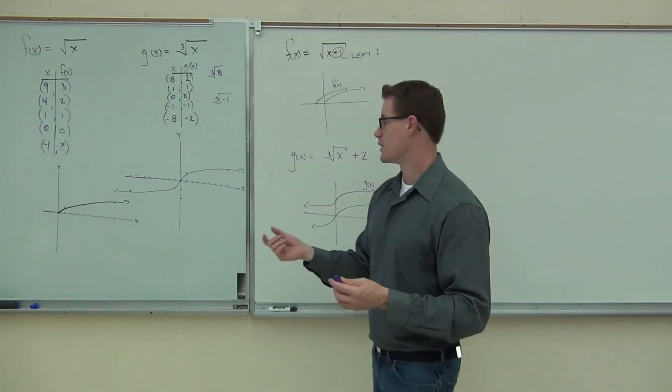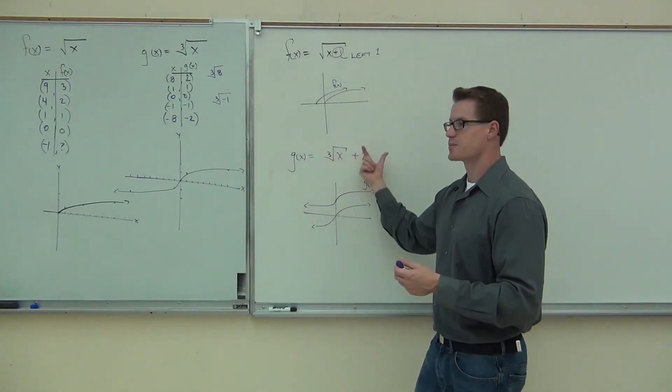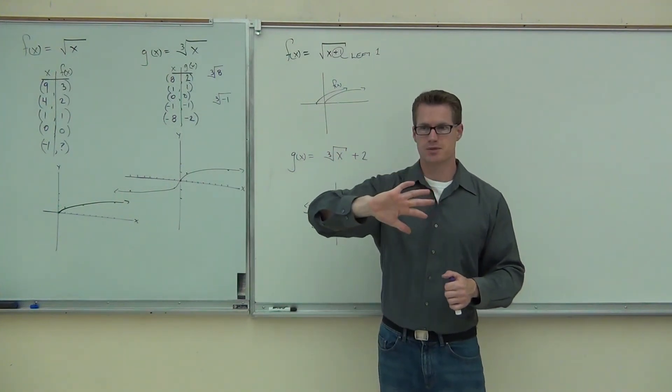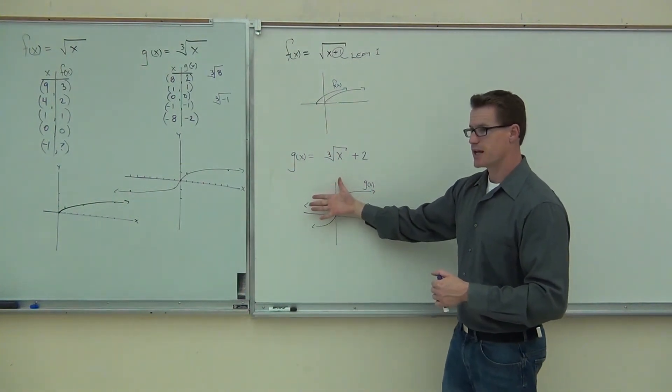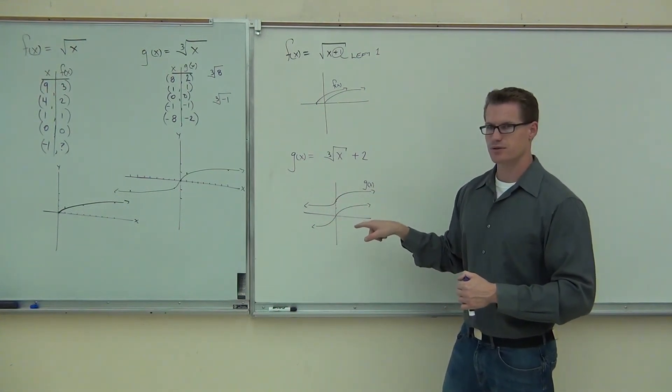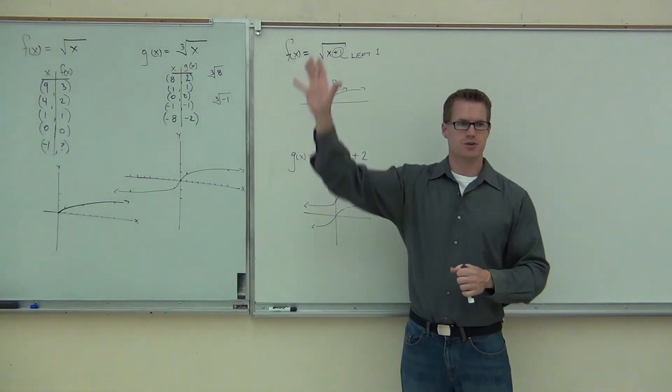We can do combinations as well. We can do something within the function and something after the function. We can even reflect it with a negative up front that would flip these things upside down. If you flip this upside down, notice you're going to get a Z-curve instead of an S-curve. Be with me on this, ladies and gentlemen. Let me understand what we talked about today.